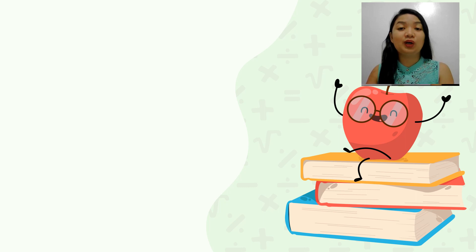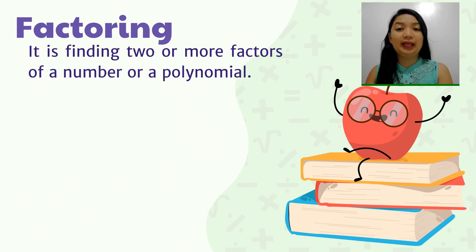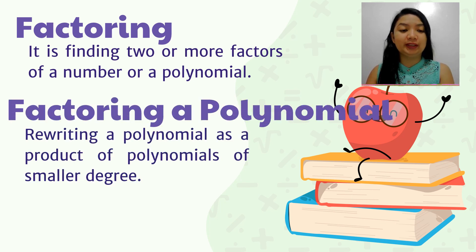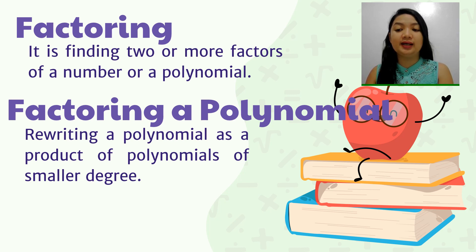Before we have the common monomial factor, let us review factoring. Factoring is finding two or more factors of a number or a polynomial. Factoring a polynomial is rewriting a polynomial as a product of polynomials of smaller degree. Factoring is the reverse of multiplication, wherein we get factors instead of products.